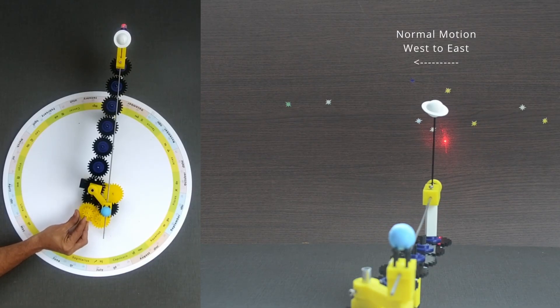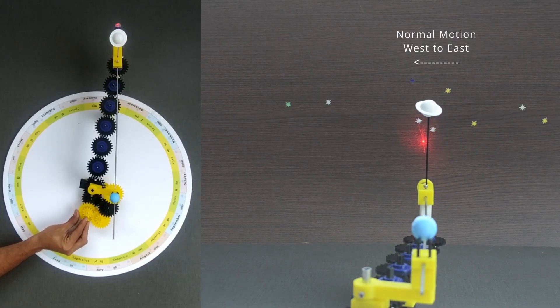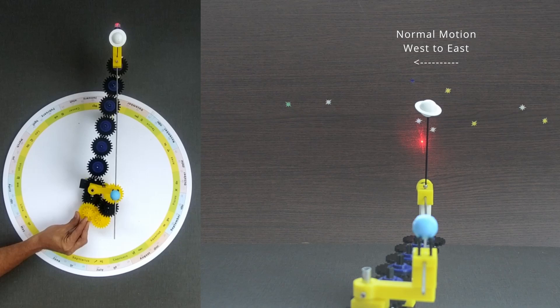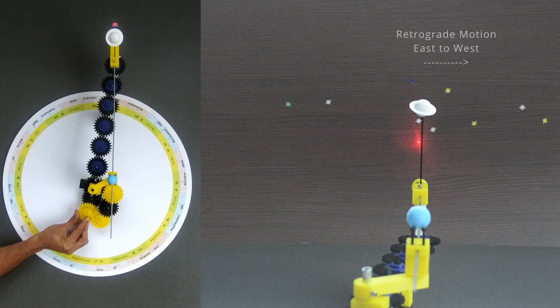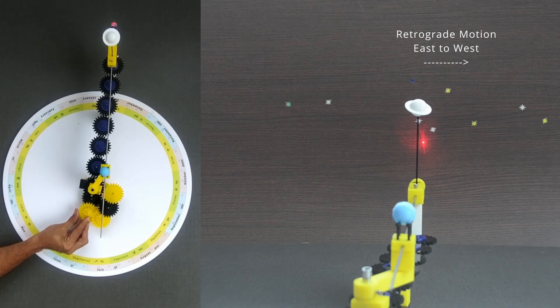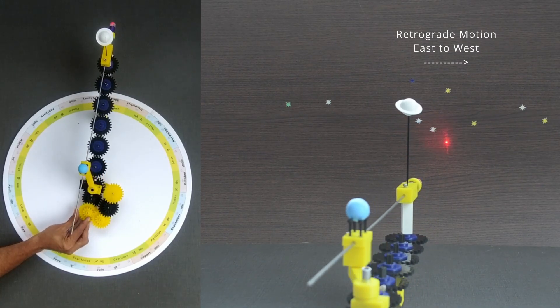In its regular path, this is the direction in which Saturn appears to move, from west to east. But during some specific interval, it appears to move backward for some time and then resumes its regular movement towards east.